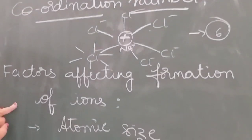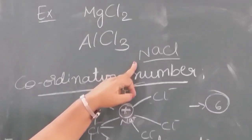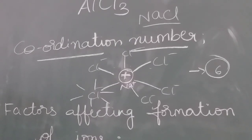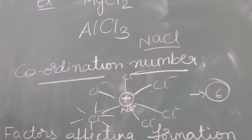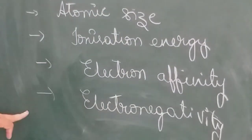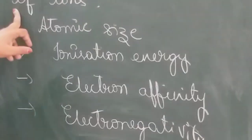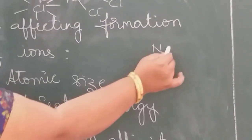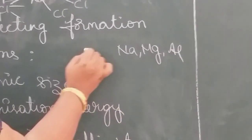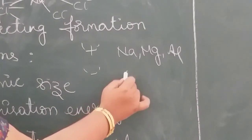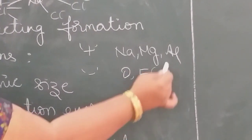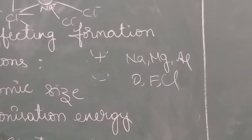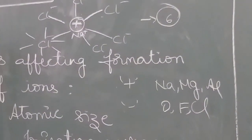Factors affecting formation of ions: in NaCl, sodium changes into a cation by losing electrons, and chlorine becomes an anion by gaining electrons. The four factors affecting ion formation are: atomic size, ionization energy, electron affinity, and electronegativity. All metals like sodium, magnesium, and aluminium will lose electrons and become positively charged cations. All non-metals like oxygen, fluorine, and chlorine will gain electrons and become negatively charged anions. So metals form cations, whereas non-metals form anions.